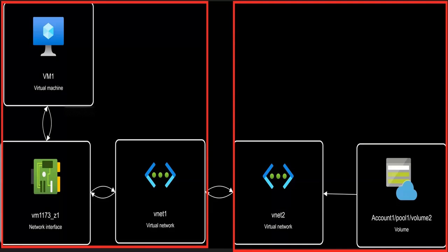Once peering is configured properly, the engineer can access volume 2 in vNet2 from VM1 in vNet1. From the diagram, you can see VM1 is in vNet1, and to the right you can see volume 2 is in vNet2. Though both virtual networks are in the same region, they cannot access each other's resources because there is no peering between the two virtual networks.